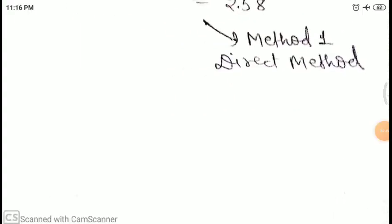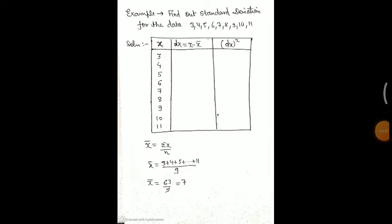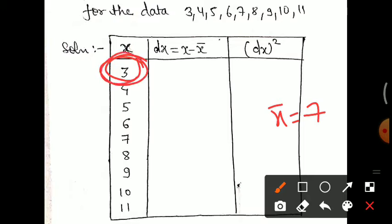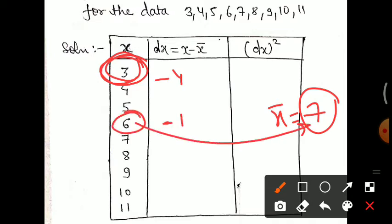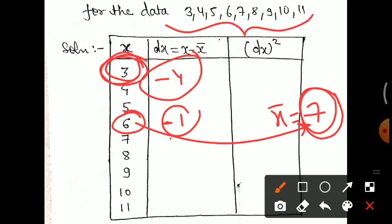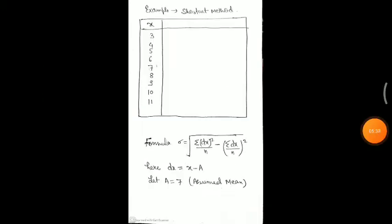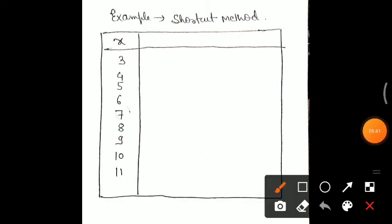Standard deviation is basically the deviation of given values from the mean. For example, for value 3 and x̄ equals 7, the deviation is 3 minus 7 equals minus 4. We find deviations with respect to the mean value for all values, and the overall resulting measure is the standard deviation. Now, after the direct method, we will look at the shortcut method.